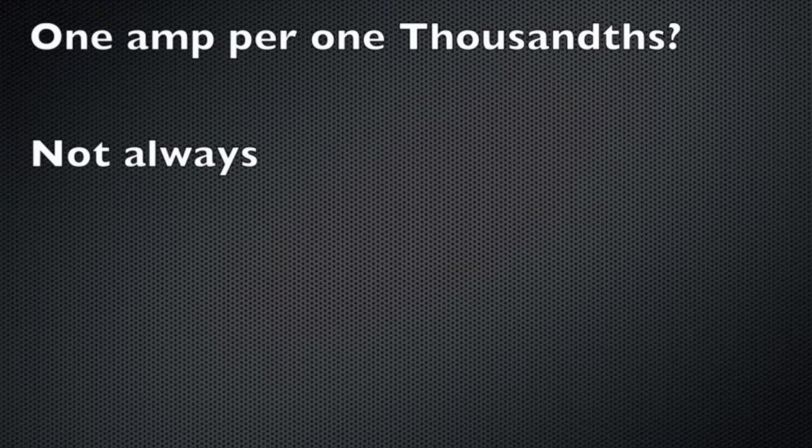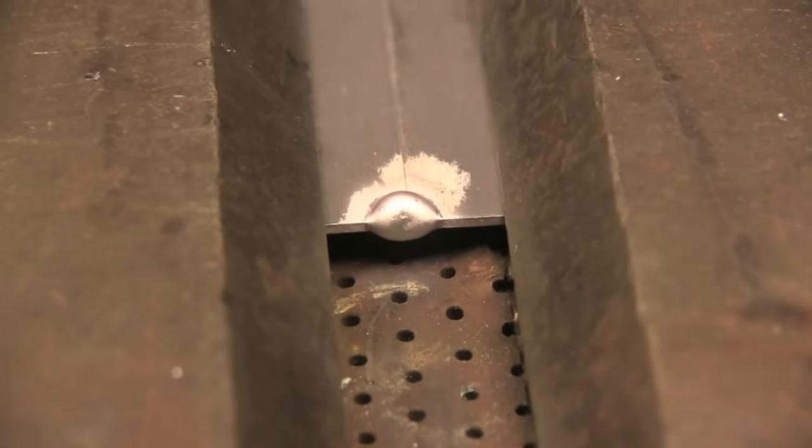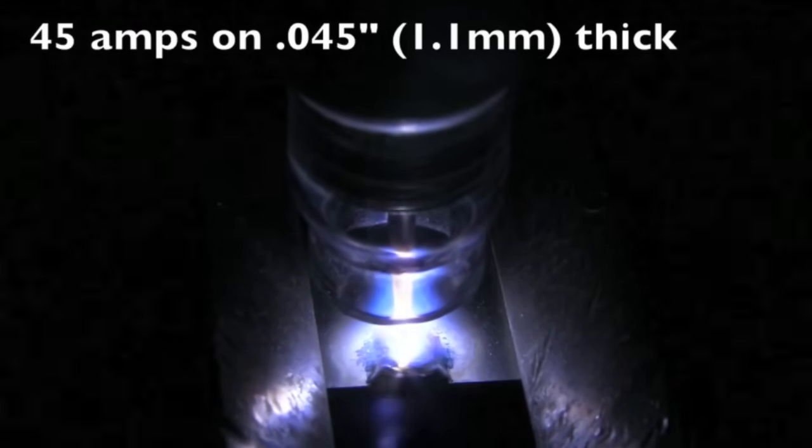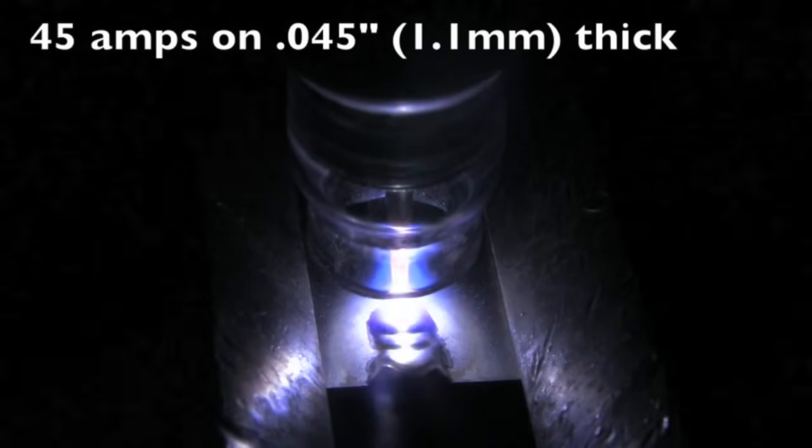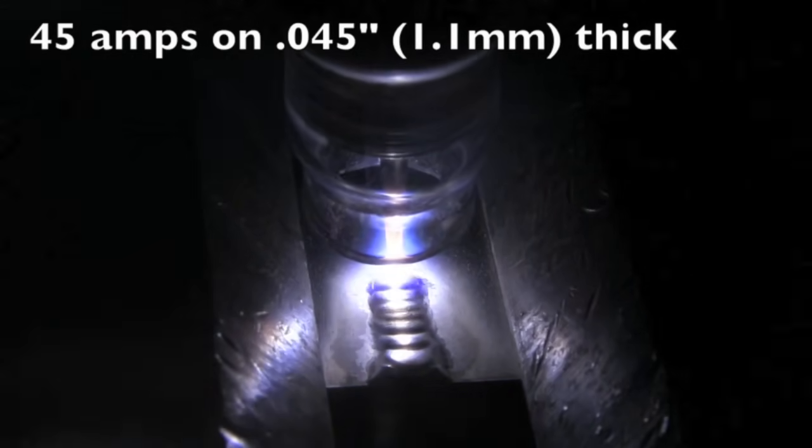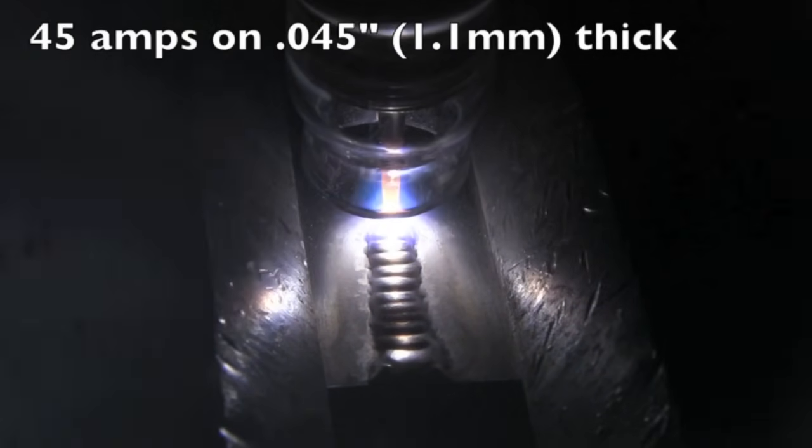There is a rule of thumb for sheet metal welding that says it takes roughly 1 amp per 1 thousandth of an inch of thickness. Well, for aluminum that kind of goes out the window because frequency changes it. If you use high AC frequency, you're going to need a little bit more amperage. And also when you have chill factors—like this is in a fixture, even though it's only a carbon steel fixture—it's still pulling heat out and requires more amperage.